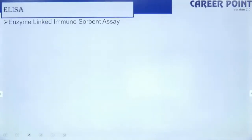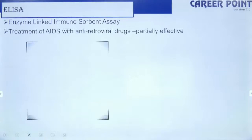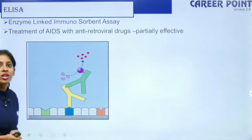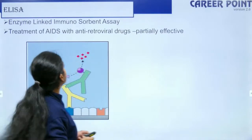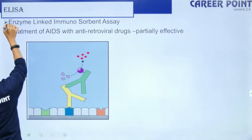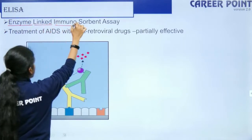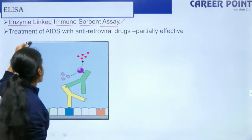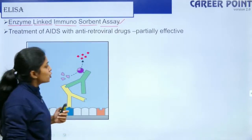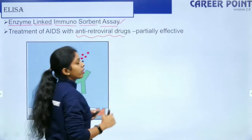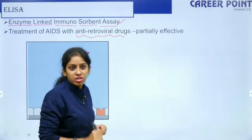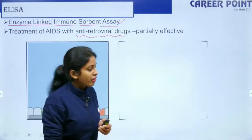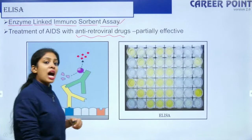The diagnostic method to detect HIV is ELISA — enzyme-linked immunosorbent assay. AIDS is treated with antiretroviral drugs that prevent the virus from performing reverse transcription, though this is only partially effective.